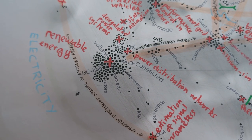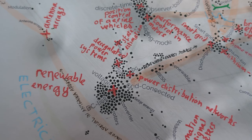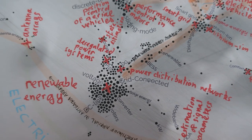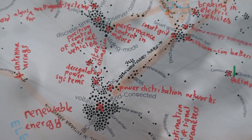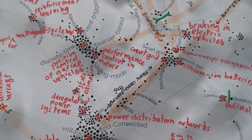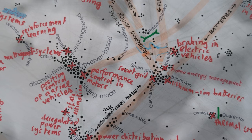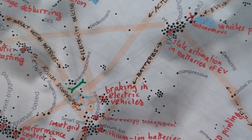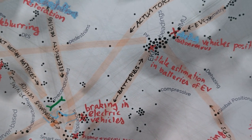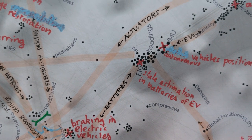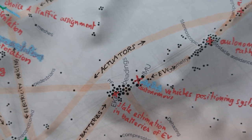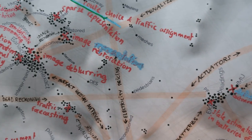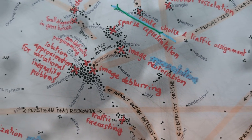That makes clusters of basically semantic fields — words that come together. So here, for instance, we would have words like voltage, DC link, rotors, converters, and solar energy. We use those words to find the papers that contain them, read them, and manually create a summary label that we then put on the map. So this would be the renewable energy cluster of papers.